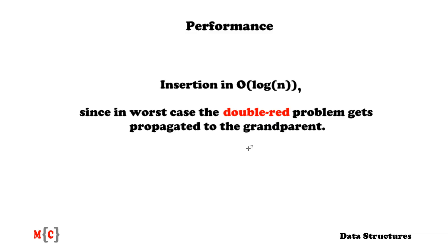That's it — I've explained how insertion works for red-black trees, we've done an intermediate example together, I've provided the pseudocode, and we now understand the performance of the insertion algorithm. If you found this video useful, please hit the thumbs up. If you have any questions, use the comment section below. And if you want to see more videos like this one, make sure to subscribe.